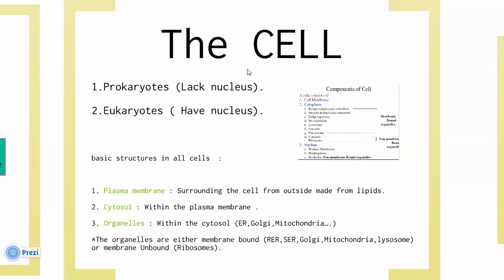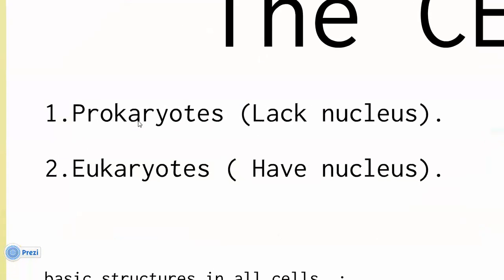Then we talked about the cell. First, we have the classification of cells. Simple classification: we classify cells into prokaryotes and eukaryotes. Prokaryotes lack a nucleus, and eukaryotes have a nucleus.